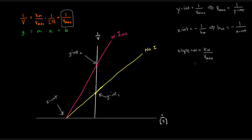In addition, the slope changed. KM stayed the same, but the Vmax decreased. The slope equals KM over Vmax — dividing by a smaller number means the slope gets bigger. So the slope increased. We can see that the rise over run for the pink line is clearly larger. Hope that video was helpful. Thank you for watching.